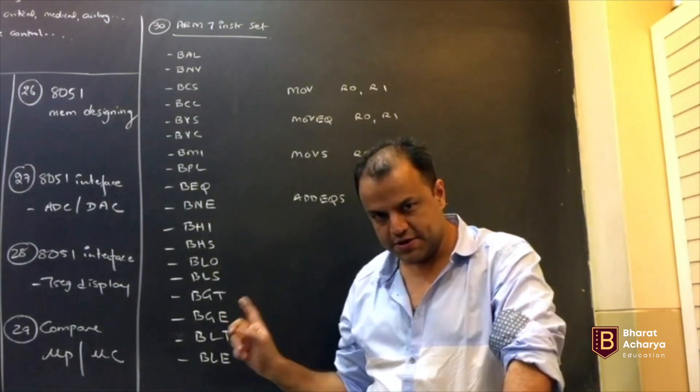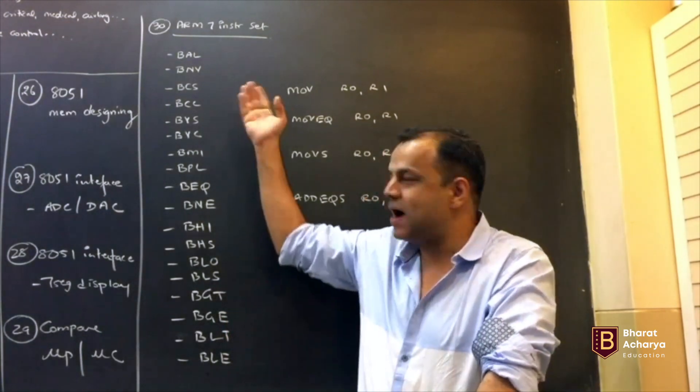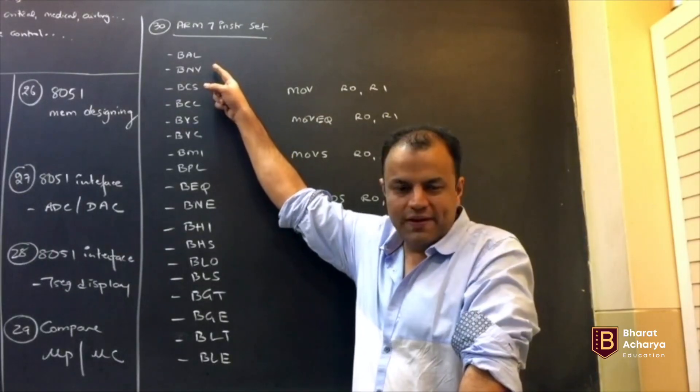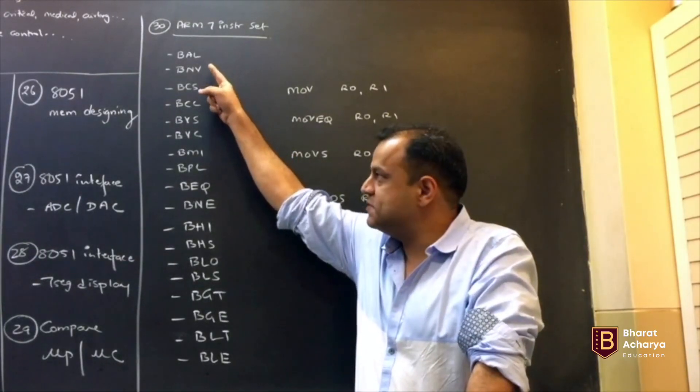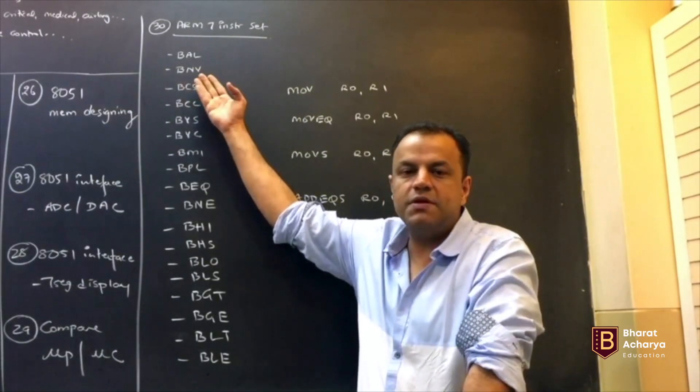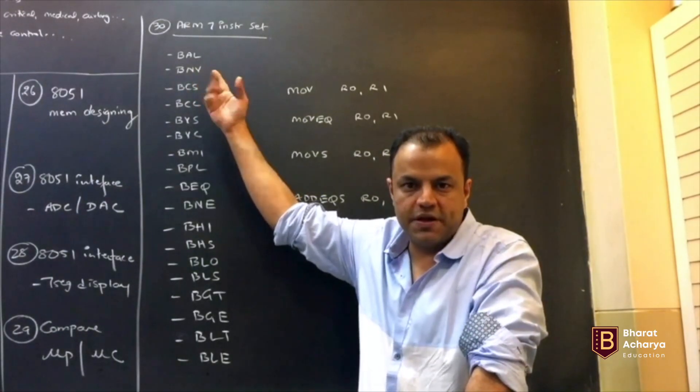First of all, know these conditional branches of 8087, of ARM. BAL, branch always, will always jump. So it's an unconditional jump. It will always jump. Branch never will never jump. So it will never jump. So it's a dummy instruction like NOP, no operation, of 8051.